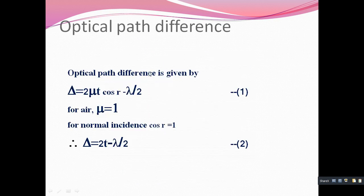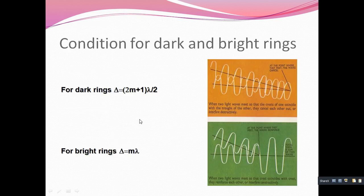What is the optical path difference between the two rays? The optical path difference is given by delta = 2μt cos r − λ/2. For air, μ = 1, and for normal incidence, cos r = 1 since the angle is 0 degrees. Therefore, the path difference simplifies to delta = 2t − λ/2. The conditions are: for dark rings, delta = (2m + 1)λ/2; for bright rings, delta = mλ, which is an integral multiple of lambda.